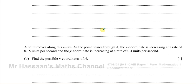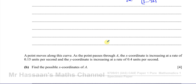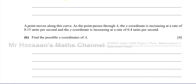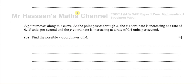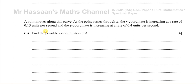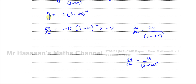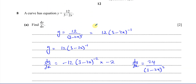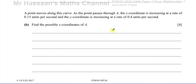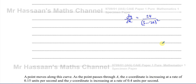Now for Part B. A point moves along this curve and as this point passes through A, the x-coordinate is increasing at a rate of 0.15 units per second and the y-coordinate is increasing at a rate of 0.4 units per second. The curve is y equals 12 over 3 minus 2x, and we know dy/dx equals 24 over 3 minus 2x all squared.